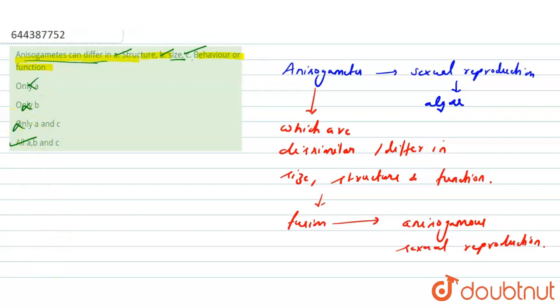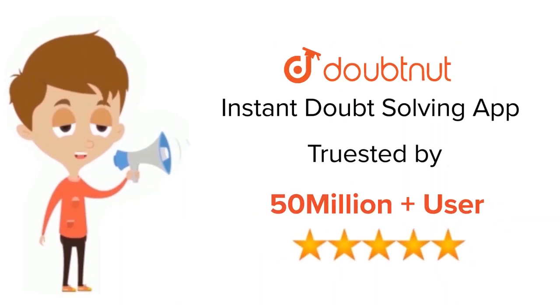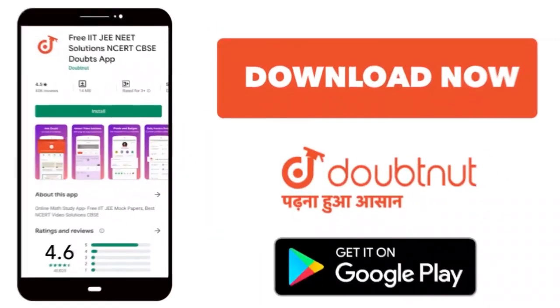For class 6 to 12, IIT-JEE and NEET level, trusted by more than 5 crore students. Download Doubtnet app today.